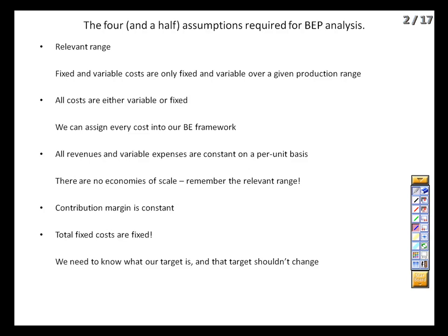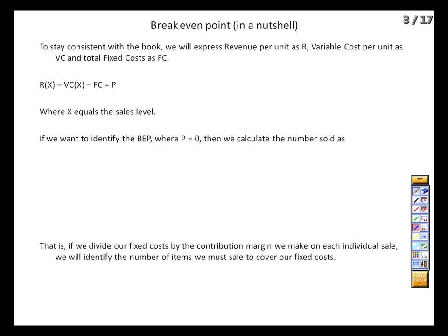With those 4.5 assumptions in place, we can now start to do some math. Essentially, we're doing basic algebra using our costs and revenues as inputs into a linear equation. We call our revenue per unit R, variable cost per unit VC, and fixed costs FC. Our desired profit level is P, and with x being our unit sales level, profit equals the contribution margin on all products — (R minus VC) times x — minus the fixed costs we pay regardless of sales level. Break even is where P equals zero. Setting P equal to zero and rearranging, the level of sales needed to break even is fixed costs divided by per-unit contribution margin.